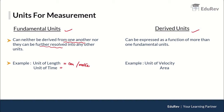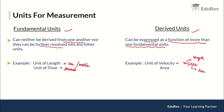Similarly, the unit of time, which we call 'second,' is also one of the fundamental units. Derived units, on the other hand, can be expressed as a function of more than one fundamental unit. For example, the unit of velocity is meters per second, where meter is the fundamental unit of length and second is the fundamental unit of time.